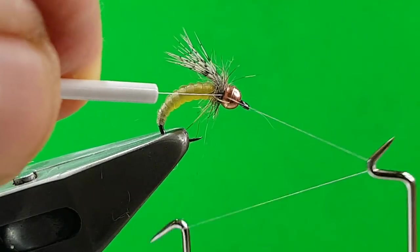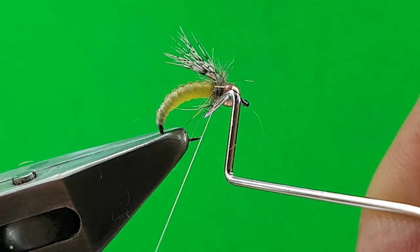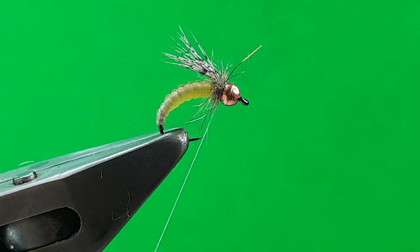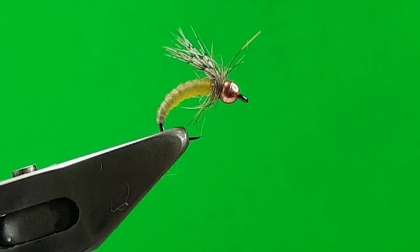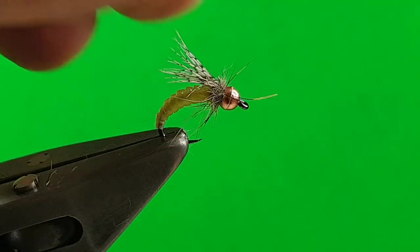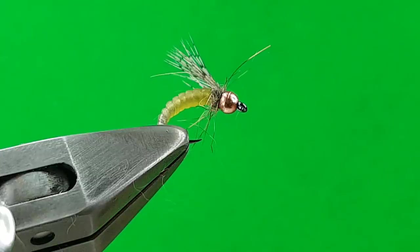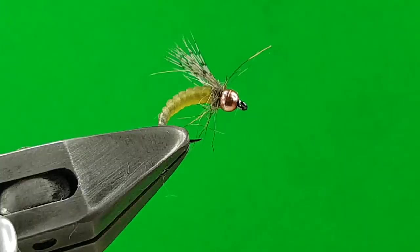Whip finish. One, two, three, off. Hold your bead, pull it tight, and that locks everything in. Thread off. That'll flatten off, and the partridge is sitting up a bit, but that'll flatten off in the water. And that's your flashback caddis.